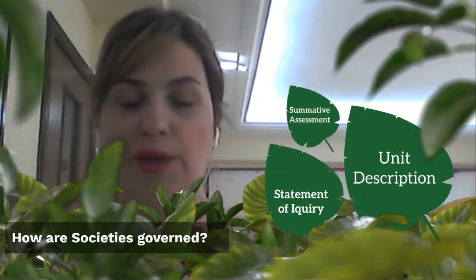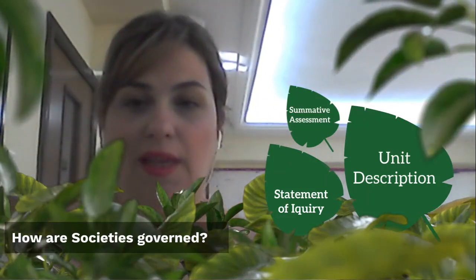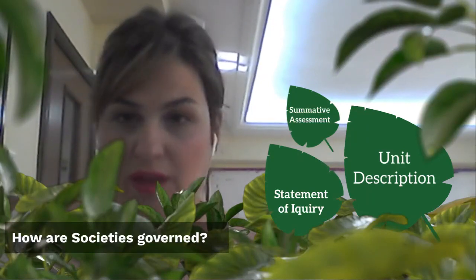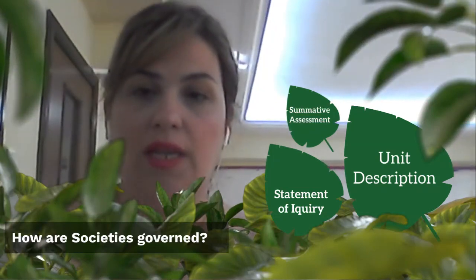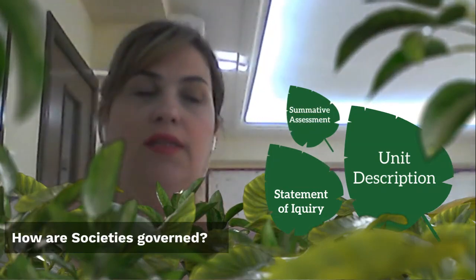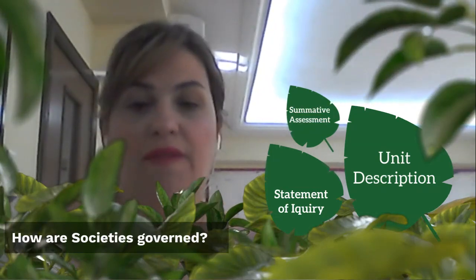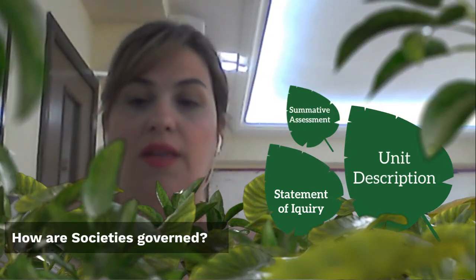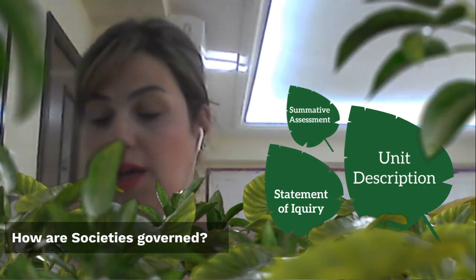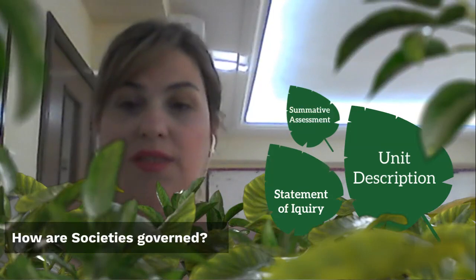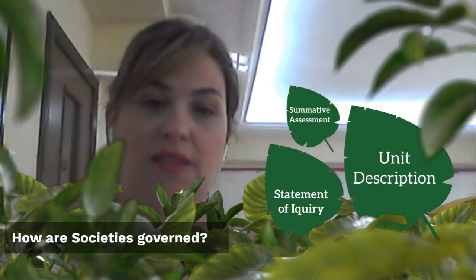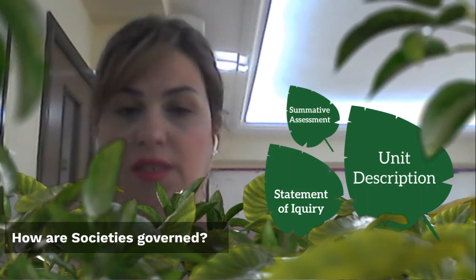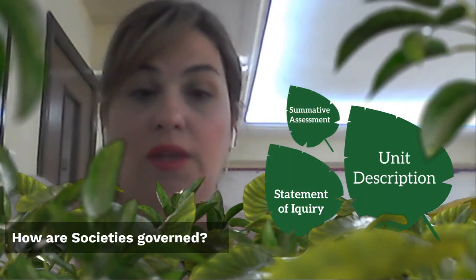My dear students, this video is a summary of what we're going to cover in Chapter One in the Individuals and Societies course. Chapter One is entitled 'How Are Societies Governed?' We're going to discuss three broad types of governance in this chapter. I'm going to start by giving you a unit description of the chapter.